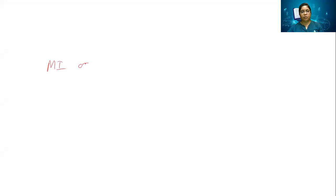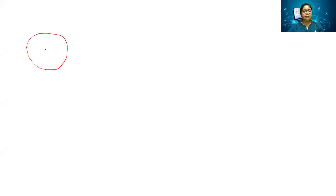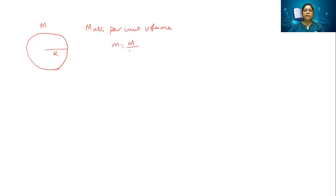Let us go into the derivation of the moment of inertia of a solid sphere. So let me consider a sphere — I am only giving a two-dimensional representation of a three-dimensional sphere. This sphere has a radius r and a mass m. Mass per unit volume, because it's a three-dimensional object, is given by ρ = m / (4/3 π r³), which is the volume of a sphere. So ρ = 3m / (4 π r³). This is the first step.